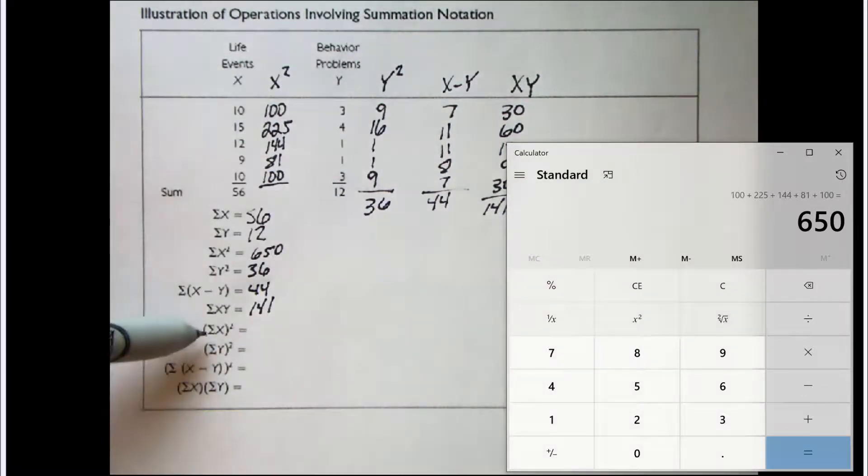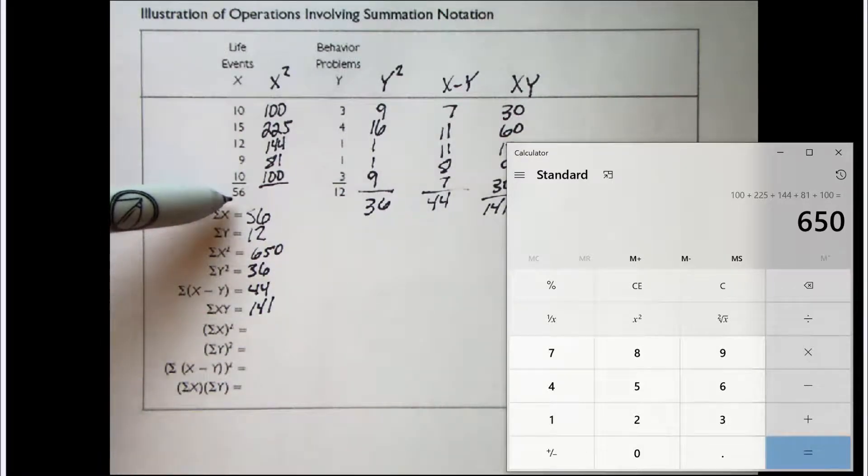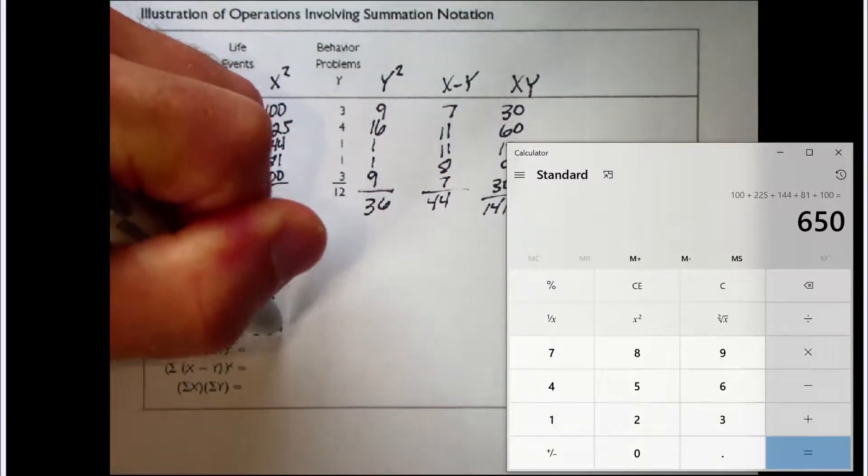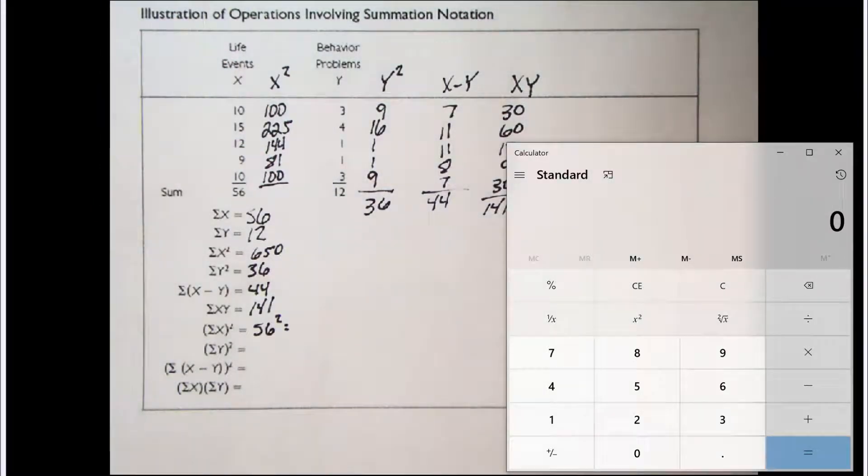In this next one, we have the sum of X, that quantity squared. We already know the sum of X. It's equal to 56. So we need to take that quantity and square it. So we have 56 squared. Let's figure out what that equals. 3,136.